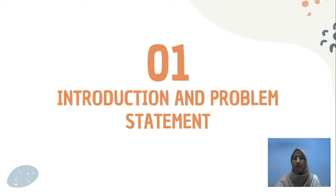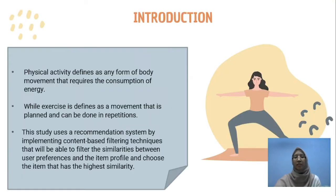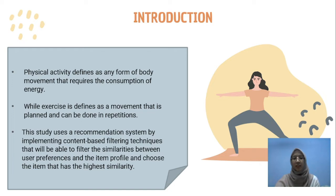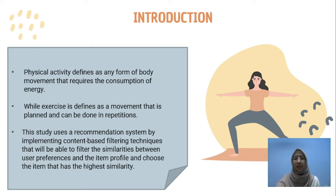The presentation will start with the first section, which is Introduction and Problem Statement. This project is mainly focused on physical activities and exercises. Physical activities can be defined as any form of body movement that requires the consumption of energy, while exercise is defined as a movement that is planned and can be done in repetitions. This project will use a recommendation system implementing content-based filtering techniques that filter similarities between user preferences and the item profile, and choose the item with the highest similarity.